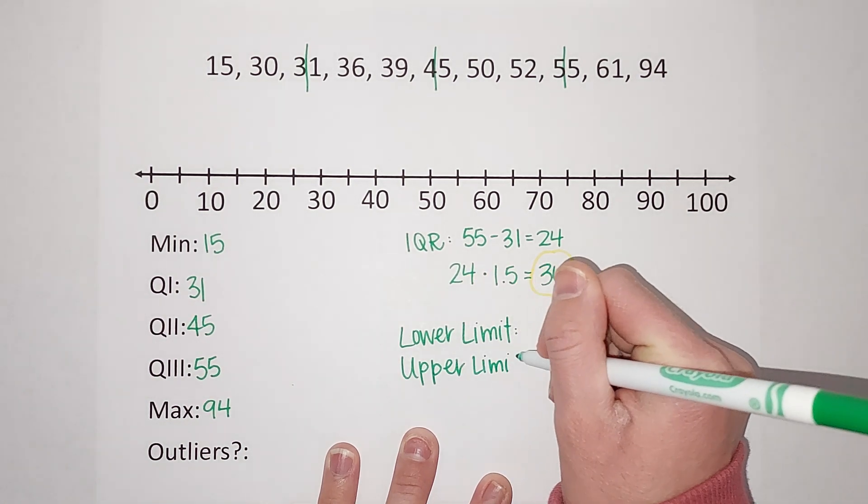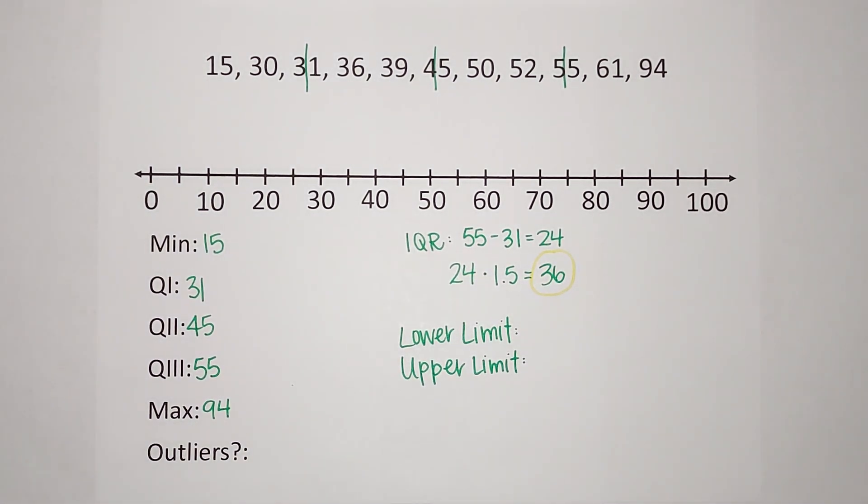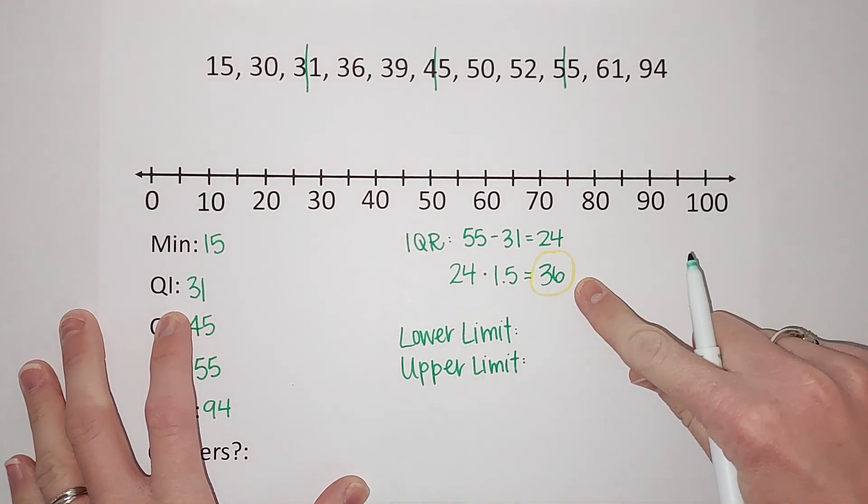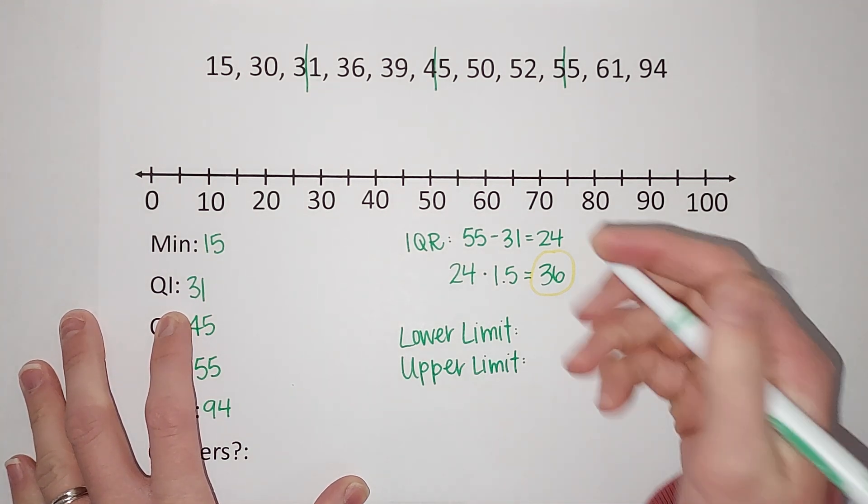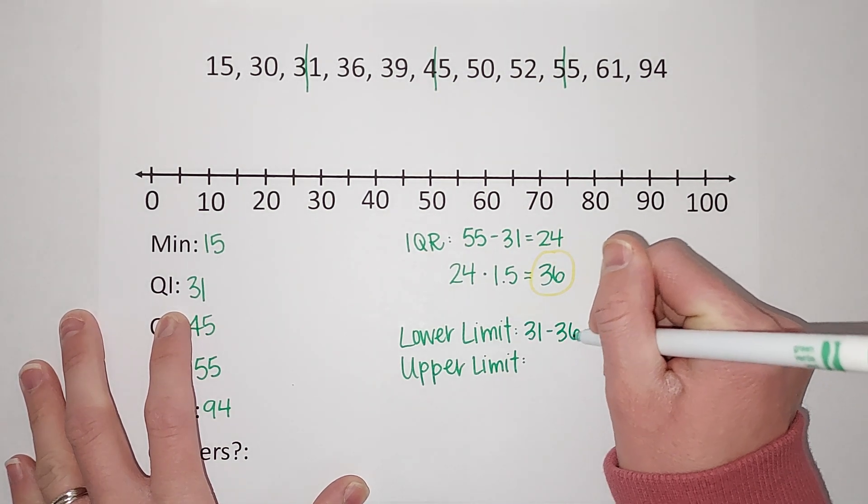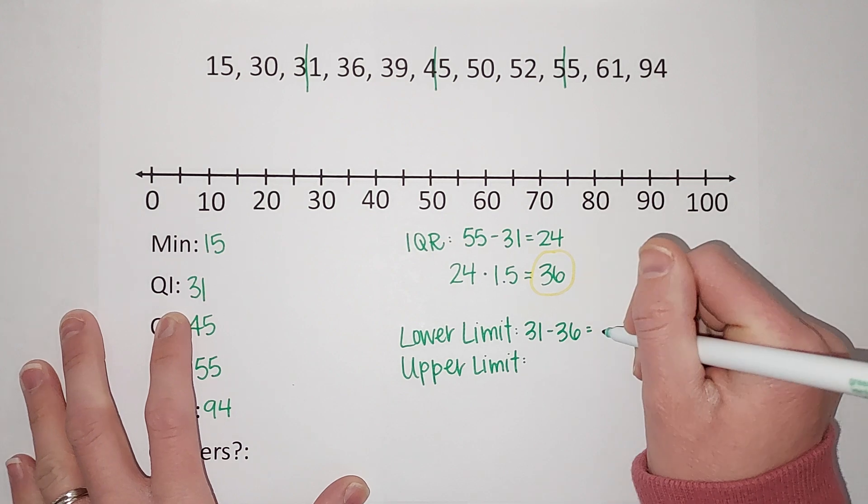Now what we do to find my lower limit, I am going to take quartile 1 and subtract this number. So 31 minus 36, which just happens to give me negative 5.